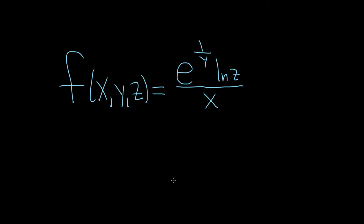Hi everyone. In this problem we have to find the domain of this function. This is a function of three variables. The inputs are ordered triples — the inputs are actually points in space. As we do this, we just have to look at each piece and find out what are the possible restrictions on x, y, and z.